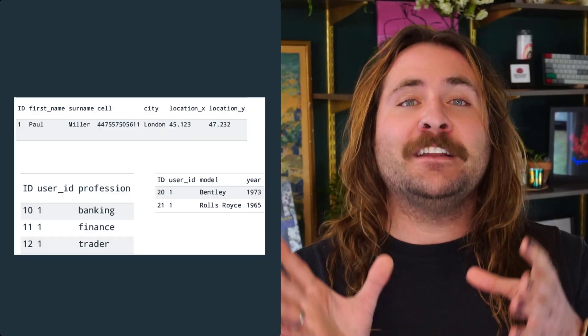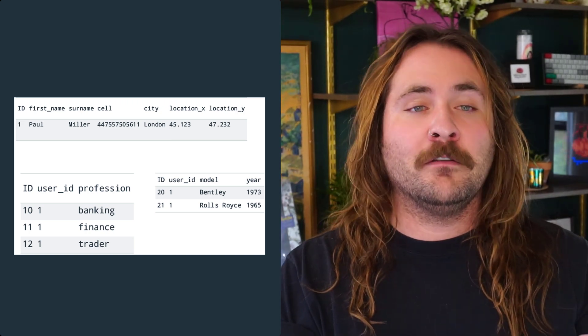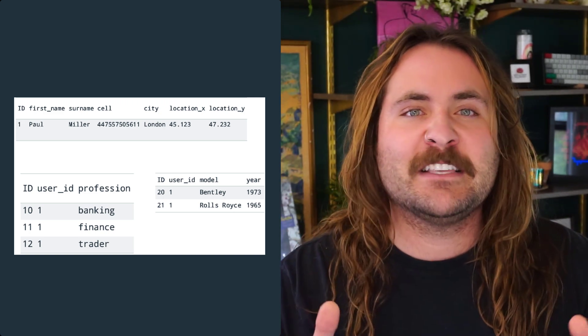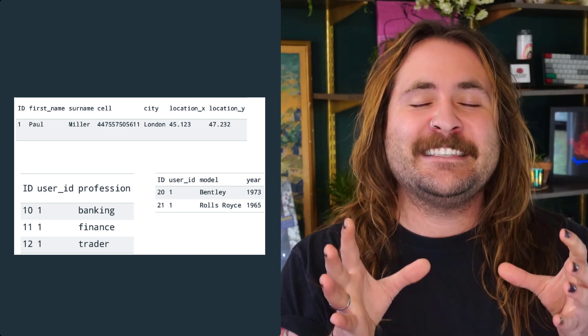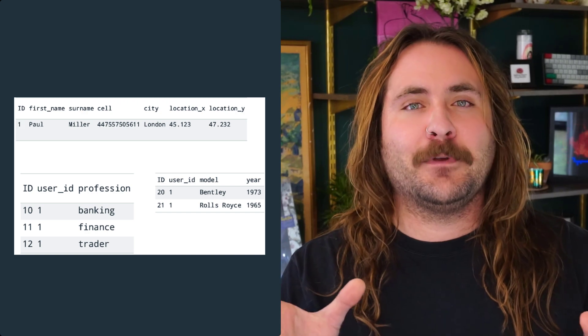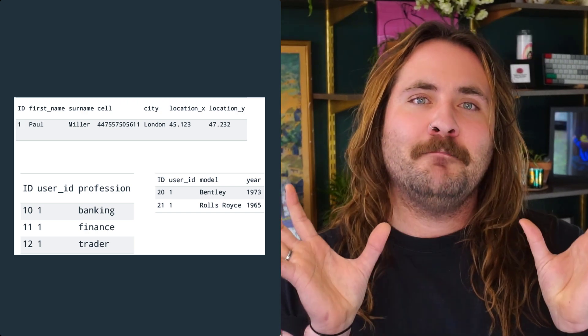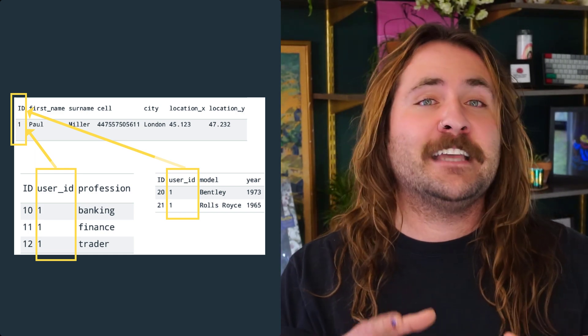Now let's take a look at how we might save the same data in a SQL database. In a SQL database, you save things in tables — think of them as fancy Excel spreadsheets. We have rows and columns of data. To save complex data in SQL, you need to normalize it by splitting it into separate tables and joining them based on unique foreign keys. With MongoDB, we can just save all that data in one place. If you want to learn more about MongoDB schema design, check out my video on MongoDB schema design best practices — link in the description below.